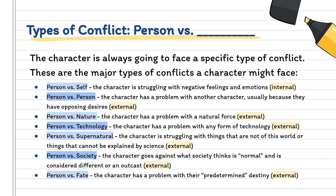Then you have person versus nature. This is when your character is struggling with some sort of natural force such as a tornado, a hurricane, an animal, maybe a tsunami. Something in nature is really being a problem for your character, and so that's what person versus nature is.